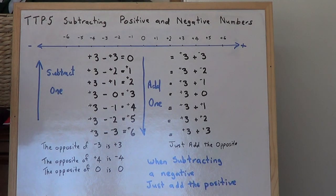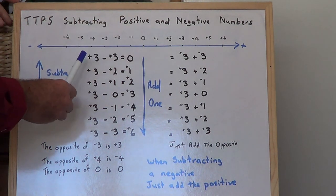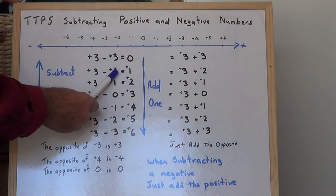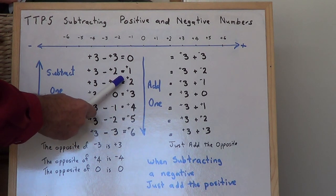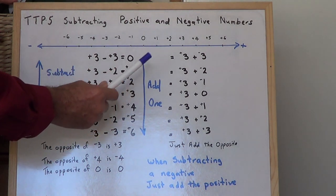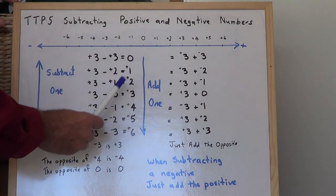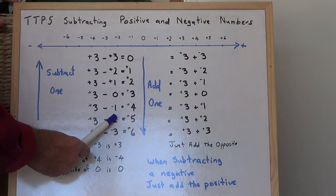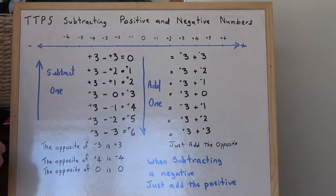Alright, have a look at this. This is the pattern. We start at 3 and we subtract 3, and we get 0. Then we go to 3 and we subtract positive 2, and we get 1. 3 subtract positive 1, we get 2. 3 subtract 0 is 3. 3 subtract negative 1 is 4. 3 subtract negative 2 is 5. And 3 subtract negative 3 is 6.